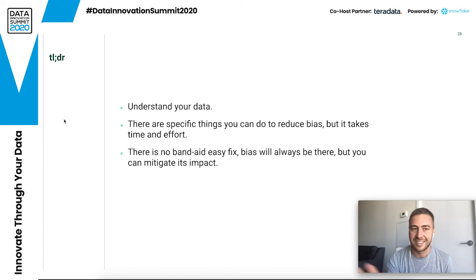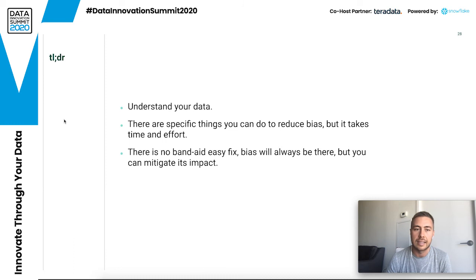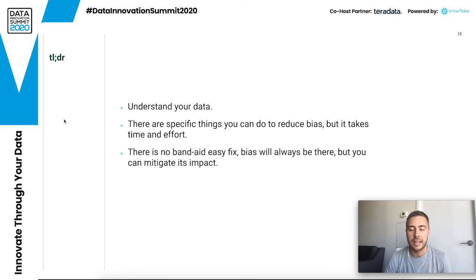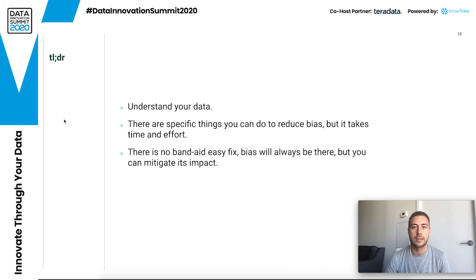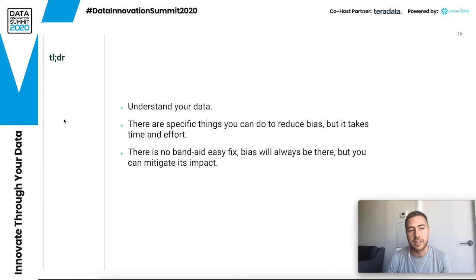As a quick summary: you really need to understand your data — where it came from, the types of labels it has, and everything about it — to determine before you even train a model whether there's bias in your data. There are specific things you can do to reduce bias, but it takes research, awareness, time, and effort. The last point is there is no band-aid easy fix. Bias will always be there, but you can mitigate its impact. You might hear a startup pitch claiming they'll give you a gender-neutral system, but there will always be some sort of bias because someone is always making the decision about what is fair and unfair. You need to always be aware of how your model will change and become more biased over time.